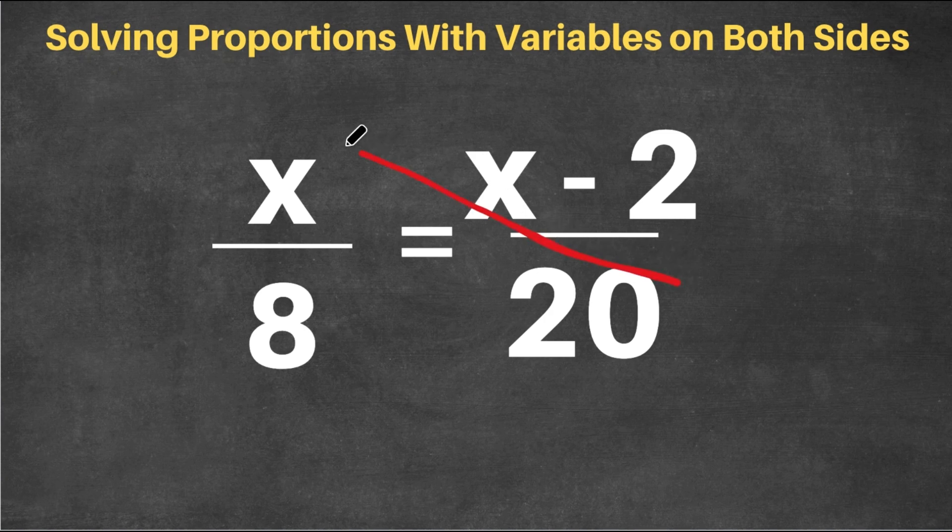So we're going to multiply x with 20 first. x times 20 is 20x. And this equals 8 times x minus 2.